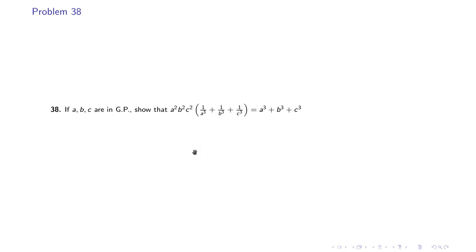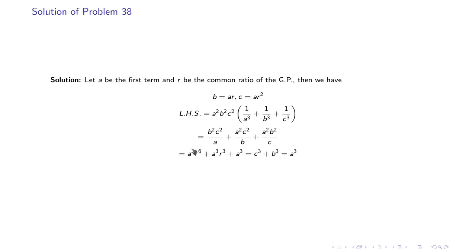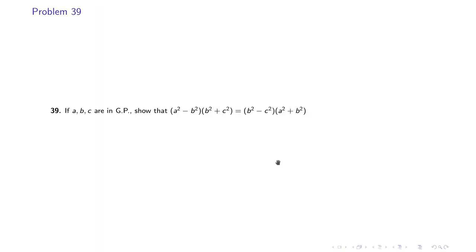Problem 38: if A, B, C are in GP, show that A²B²C²(1/A³ + 1/B³ + 1/C³) = A³ + B³ + C³. With B = AR and C = AR², multiplying A²B²C² into each term gives B²C²/A + A²C²/B + A²B²/C. Substituting the values yields A³R⁶ + A³R³ + A³, which equals C³ + B³ + A³. Thus the equality is proven.